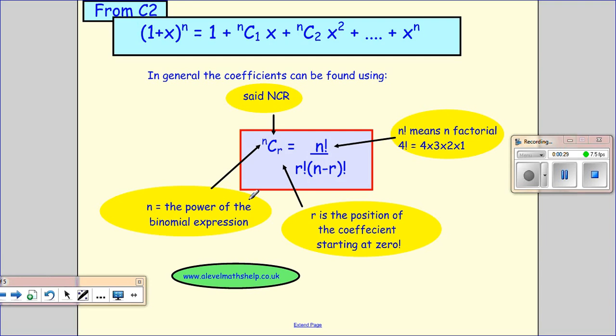Now just reminding ourselves what the nCr was: the n is the power of the binomial expression and the r is the position of the coefficient starting counting at zero. And then we had n factorial over r factorial times (n minus r) factorial. So for example, 4 factorial is 4 times 3 times 2 times 1.